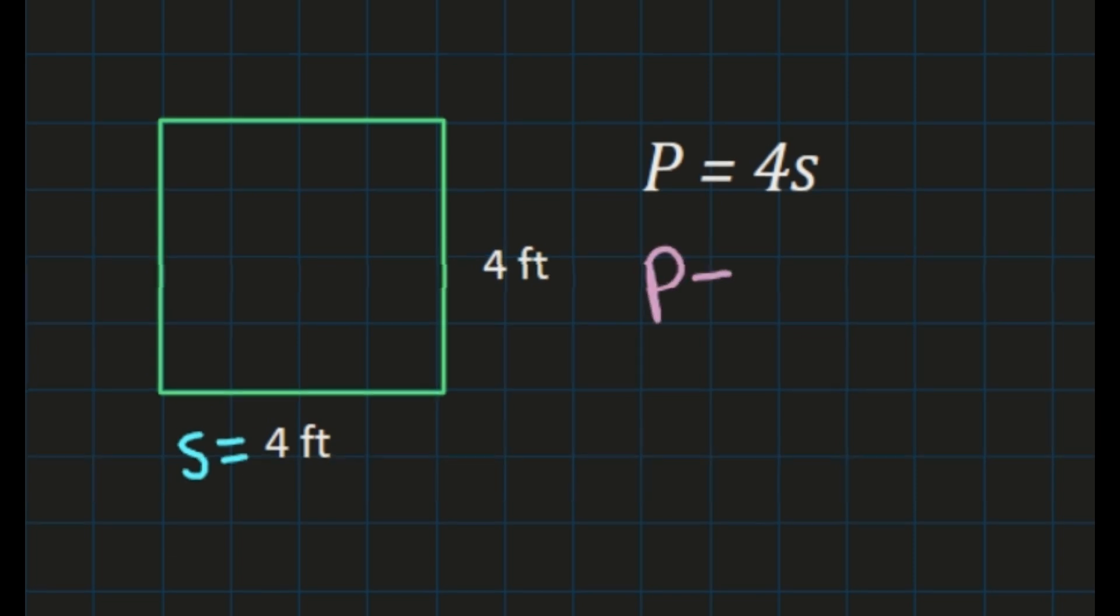So we are going to our formula, and instead of s, we're going to substitute the length of our side, which is 4. So we'll have perimeter equals 4 times 4,